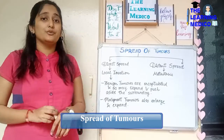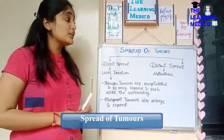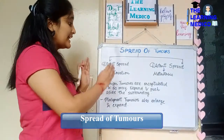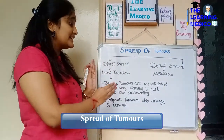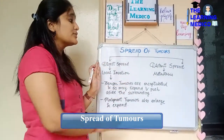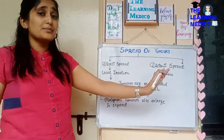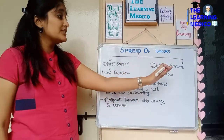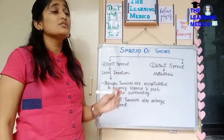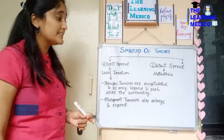Spread of Tumors can be in two ways. It can be Direct Spread or Distant Spread. Distant Spread is Metastasis.